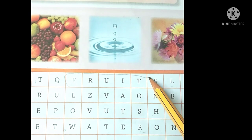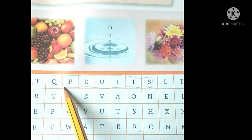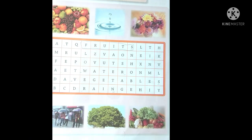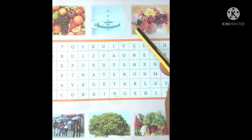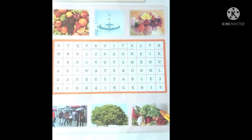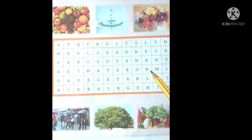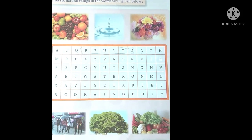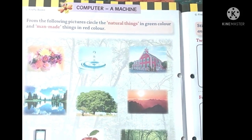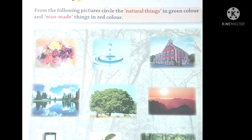Is tarah aapko complete karna hai. Students, yahan pe doosre jo natural things diye gaye hain unke naam is mein se dhundhna hai aur aapko complete kar lena hai. Now students, turn your page to page number 2.